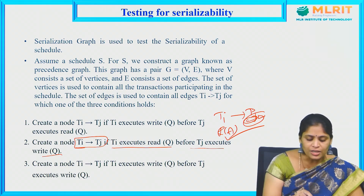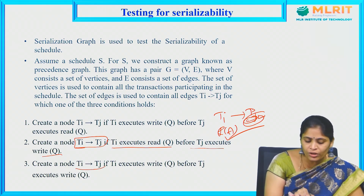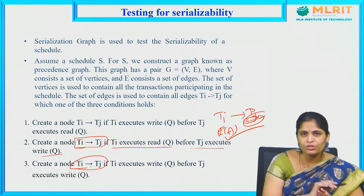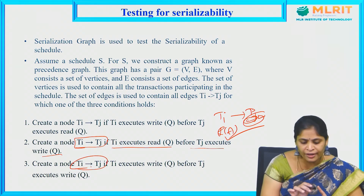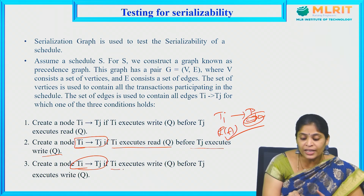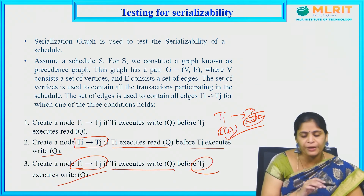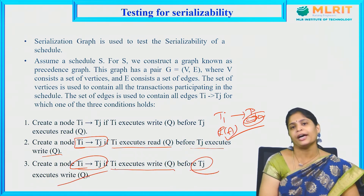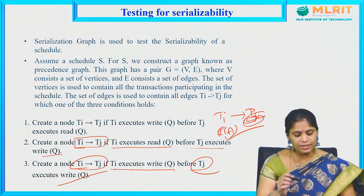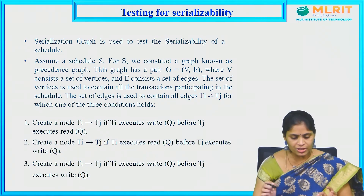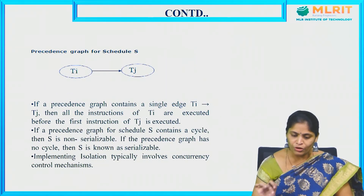The third condition is write-write conflict. Create a node TI tends to TJ if TI executes Write before TJ is updating that data item. These are the three conditions used for constructing the precedence graph.